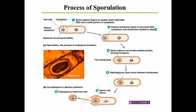The process of sporulation begins from the peripheral mesosome — the mesosome being an inner fold of the plasma membrane. Not from the central mesosome but the peripheral mesosome, invagination of the plasma membrane starts. At the end of invagination, a septum is formed, resulting in unequal distribution of cytoplasm and DNA.